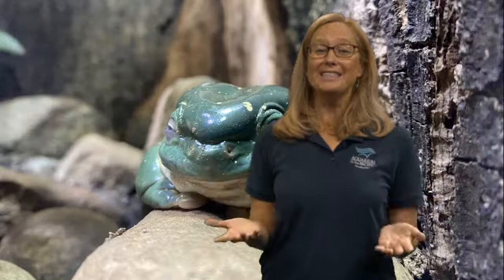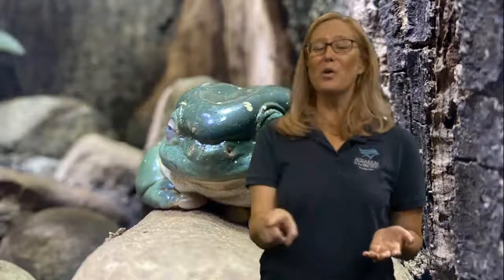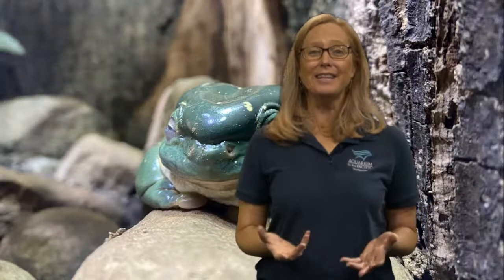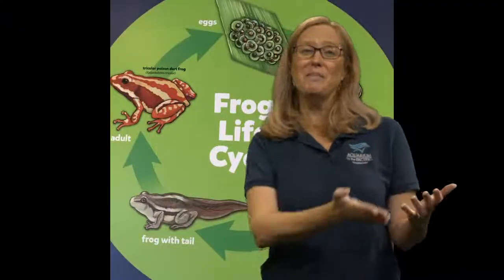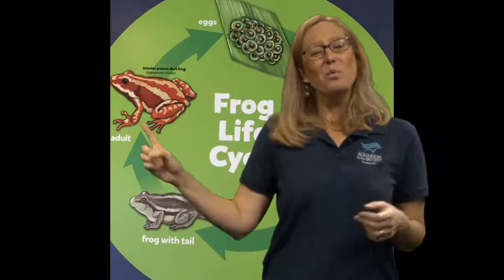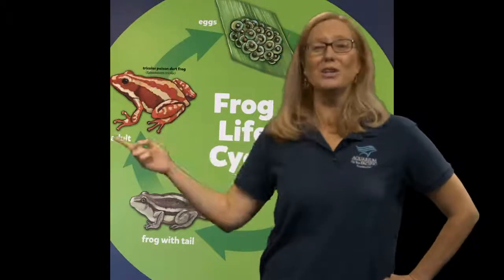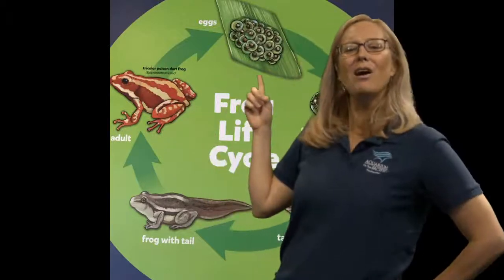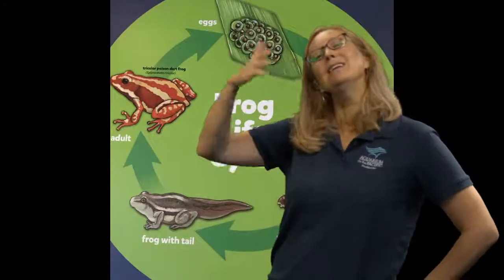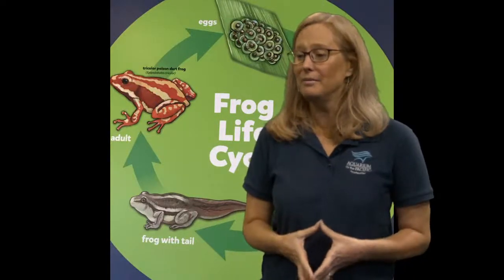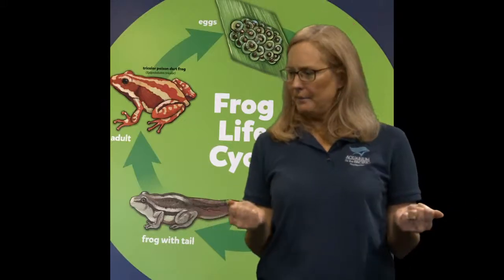As an adult frog, they can continue the life cycle — they can reproduce and lay more eggs, so the cycle just starts all over again. That's what a life cycle is: the birth, the growth, the development, and the reproduction. And when this frog gets too old, it will eventually die — that's part of the life cycle too. But before it dies, it leaves all these eggs behind to continue on the life cycle of the frog.